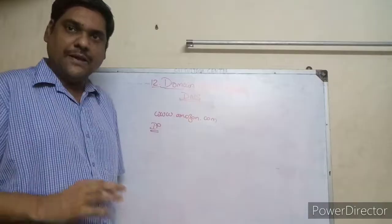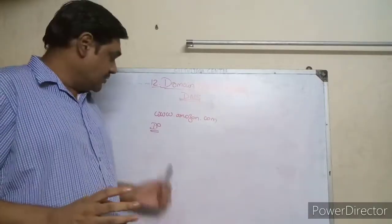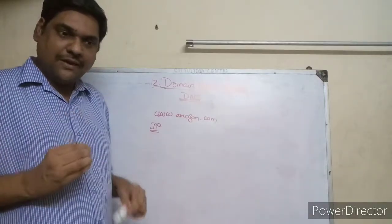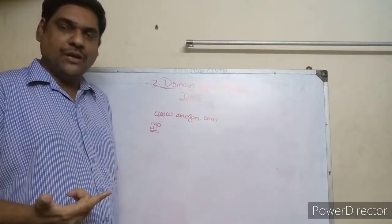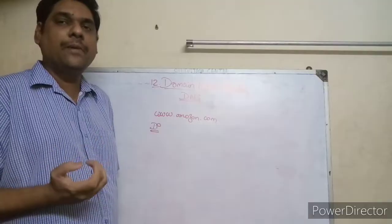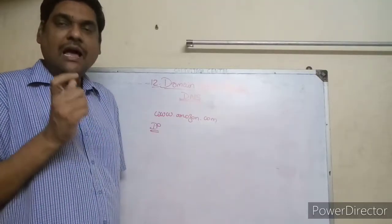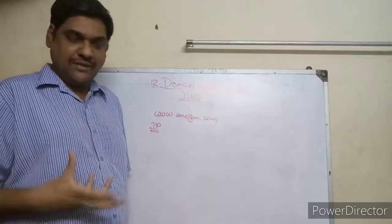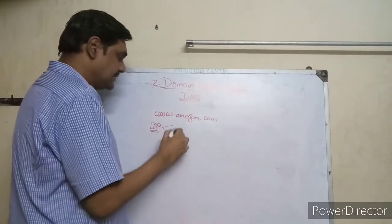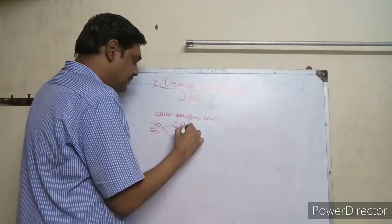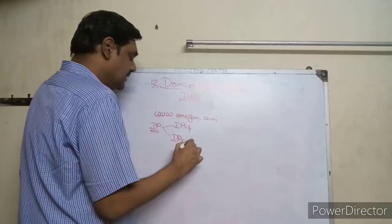So the whole concept of Domain Name System starts with IP address. Each computer on a network is assigned a unique number called an IP address. There are two methods of IP address: IPv4 and IPv6.